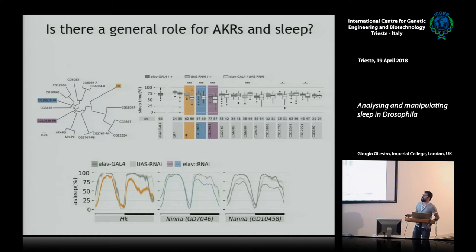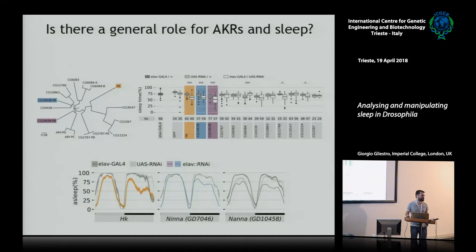We asked: if hyperkinetic is an AKR and regulates shaker through AKR activity, does it mean AKRs are generally important in regulating sleep, or is hyperkinetic a special case? We looked at the database and found that Drosophila melanogaster has 11 or 12 AKR genes. We obtained RNAi lines and did a small GAL4 screen, driving RNAi lines pan-neuronally, knocking down each AKR gene and measuring sleep over 24 hours. We found three statistically strong cases: one was hyperkinetic itself, with a sleep phenotype particularly during the night, and the other two both targeted a gene called CG10638.